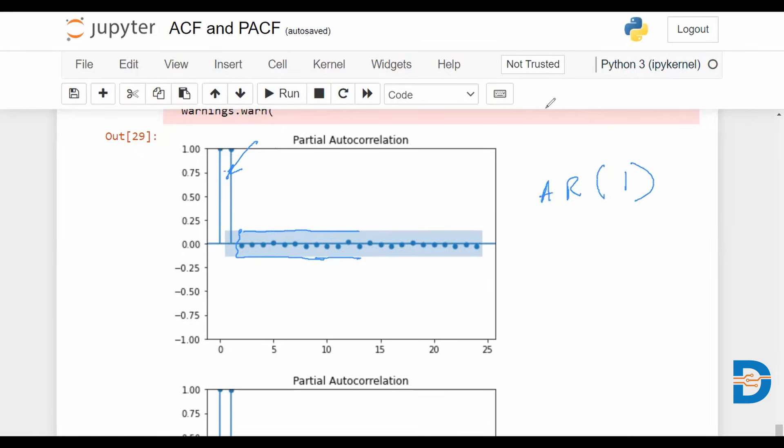So lag one is something that we can utilize as the order of our autoregressive model. That is to say, we would have any predicted value as a function of only the past value, only the past single value.